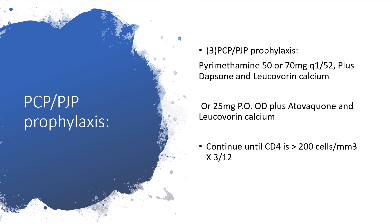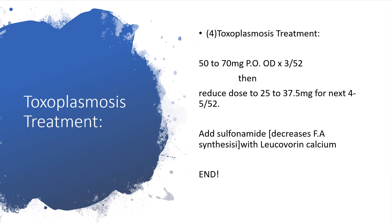Or give 25 mg once daily plus atovaquone and leucovorin. You can continue until CD4 is greater than 200 cells for three months. In toxoplasmosis treatment, give 50 to 75 mg once daily for three weeks, then reduce the dose to 25 to 37.5 mg for the next four to five weeks. Some may choose to add sulfonamide — remember, sulfonamide can also decrease folic acid synthesis — combined with leucovorin. Discuss with your attending physician, clinical pharmacologist, or pharmacist.